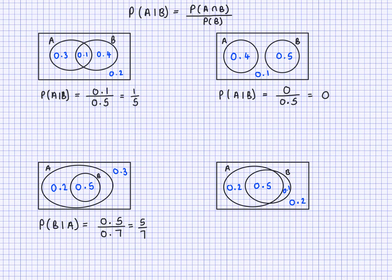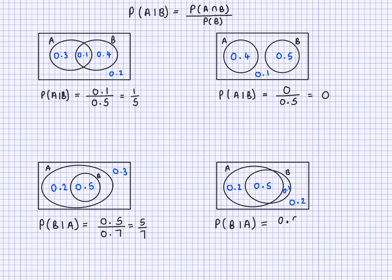In the last diagram, most of B overlaps with A with a little bit left outside. Again looking at probability of B given A — the intersection is 0.5, divided by the probability of A which is 0.2 plus 0.5, that's 0.7. So that's also 5 over 7 for this question.